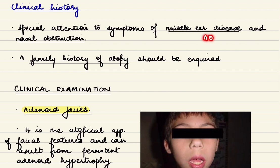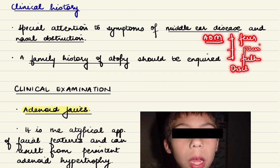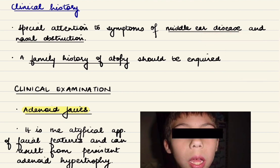In cases of acute otitis media, the patient may have fever, pain in the ear, and fullness in the ear, which may be followed by discharge. A family history of atopy should also be inquired about, as clinical implications between allergic rhinitis and adenoid hypertrophy have been well documented.